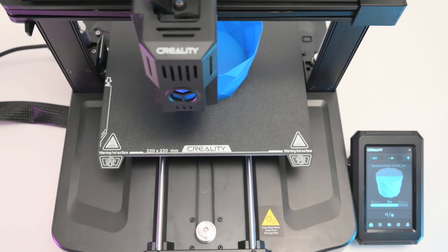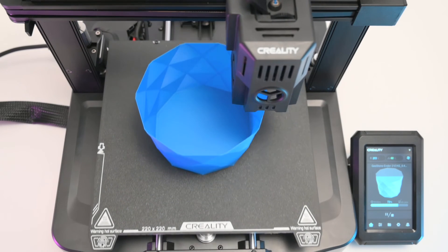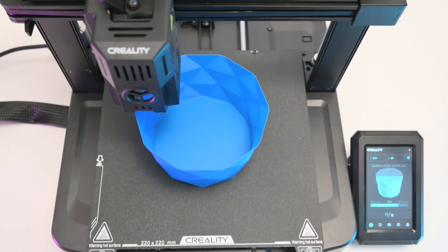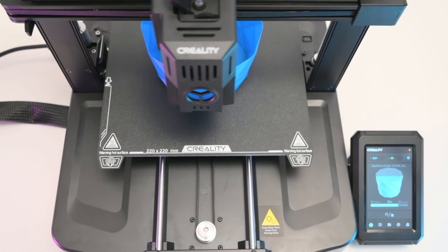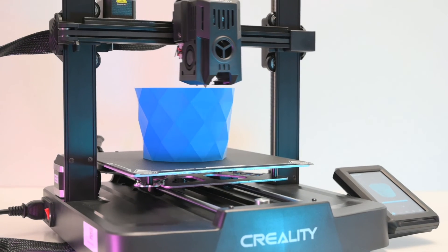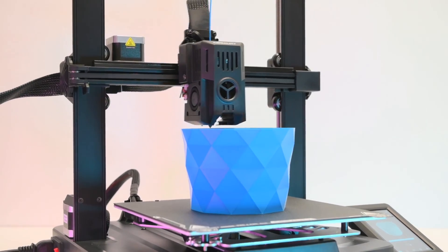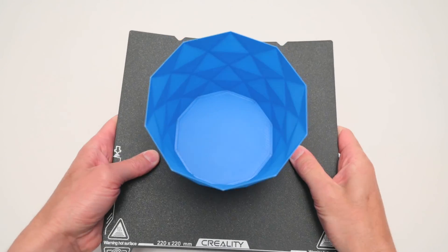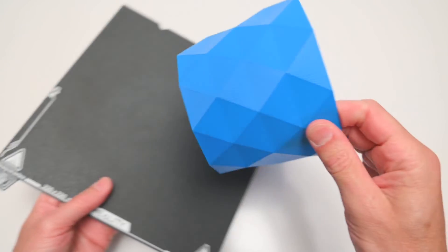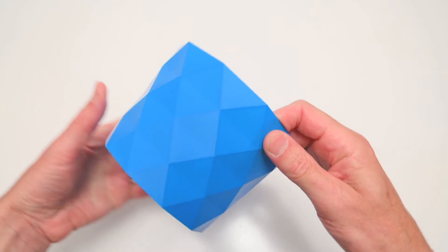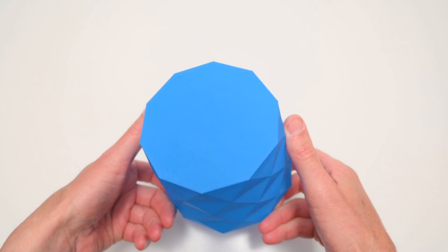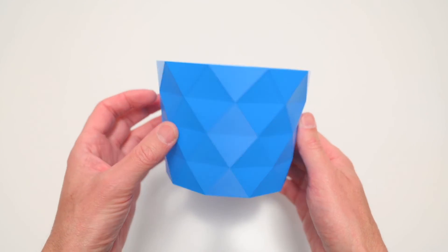The geometric pot is printed using the spiral mode which starts with a few base layers and then prints one 0.4mm wall around the edges to create the model. The PEI plate holds models well when printing and once finished it allows the printed model to be removed easily as soon as it starts to cool. The final print turned out great and the printer performed as expected producing a good result.